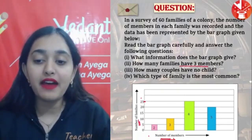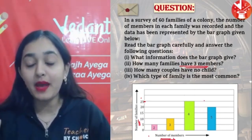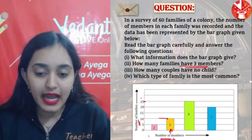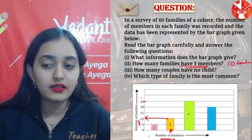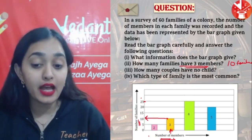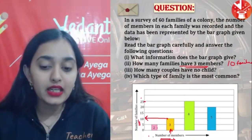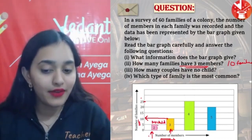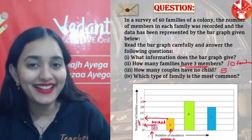Second: How many families have three members? Look at the bar graph — the height of bar for 3 members is 10, so 10 families have three members. Third: How many couples have no child? Two members means husband and wife only — no children. The bar for 2 members has height 5, so 5 families have no child.